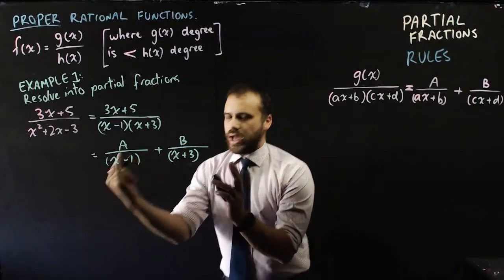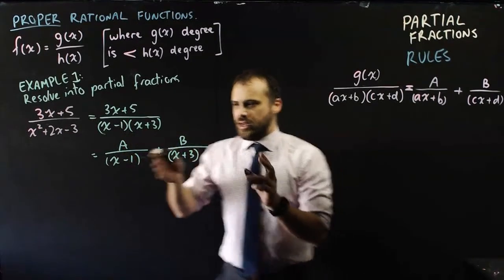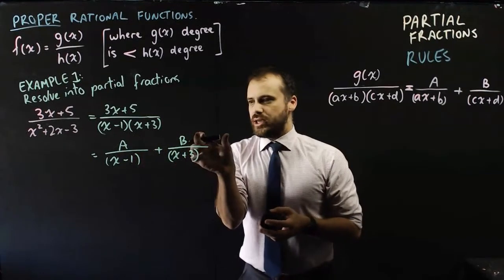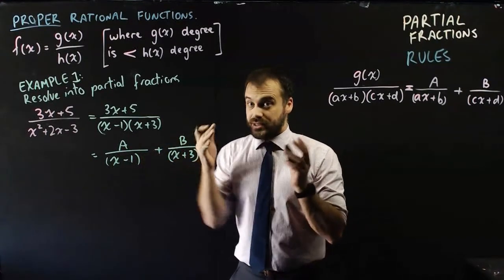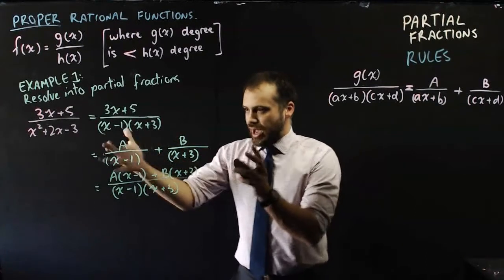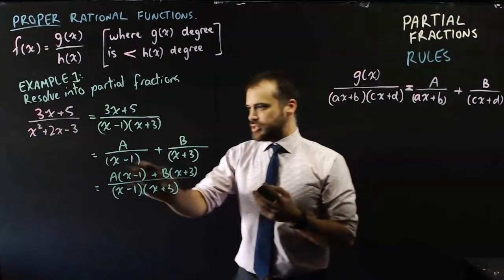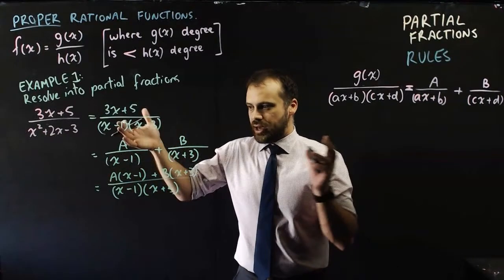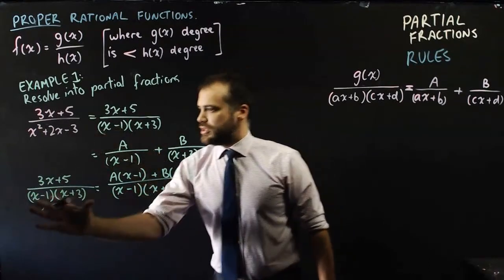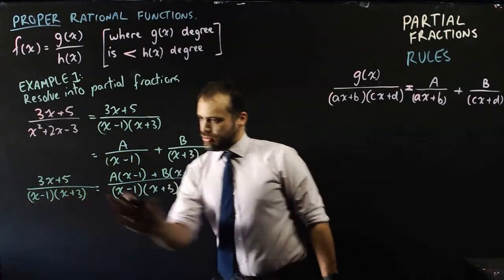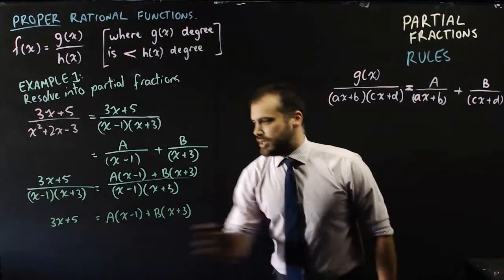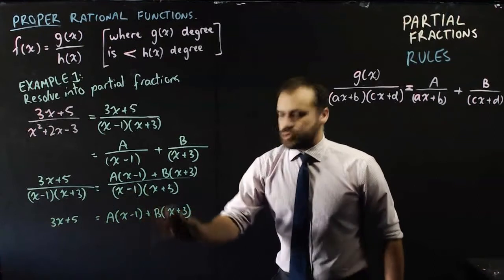Now we behave as if we want to add those two fractions back together again. To do that, we multiply the first numerator by (x + 3) and the second numerator by (x − 1), and put them all over the single denominator (x − 1)(x + 3). This is just adding two fractions by making the denominators the same, exactly like a year 7 student would do. Now we have: 3x + 5 = a(x − 1) + b(x + 3).